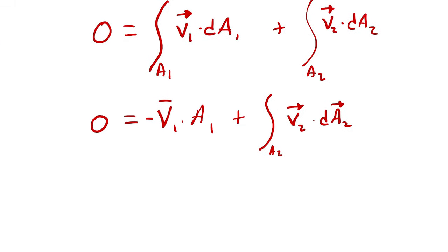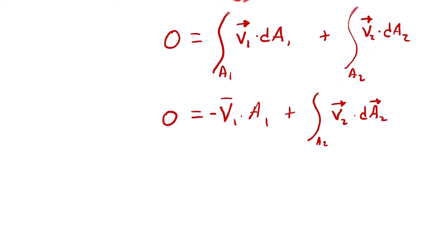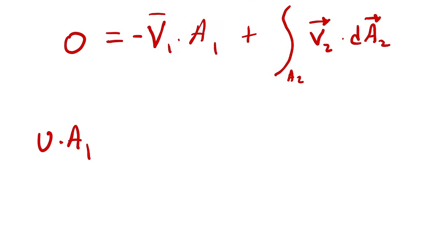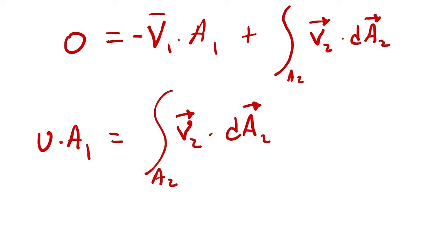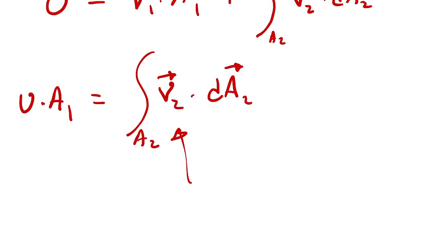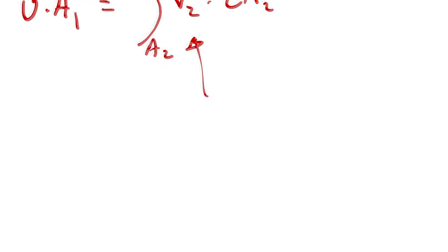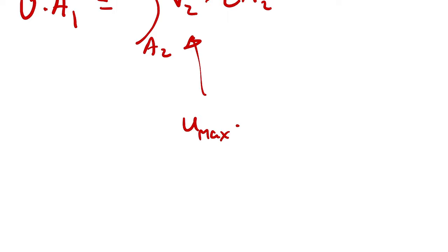Bringing the inlet term to the left side, I recognize the average inlet velocity is big U, so I write U times A₁ equals the integral across A₂ of v₂ dA₂. The velocity at the outlet has a profile — it's really the x-direction velocity u = u_max times (1 - r²/R²), where u_max is a constant and R is a constant. So I plug in u_max times (1 - r²/R²) for v₂.